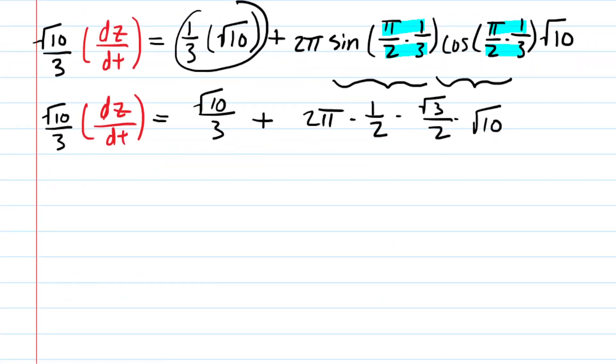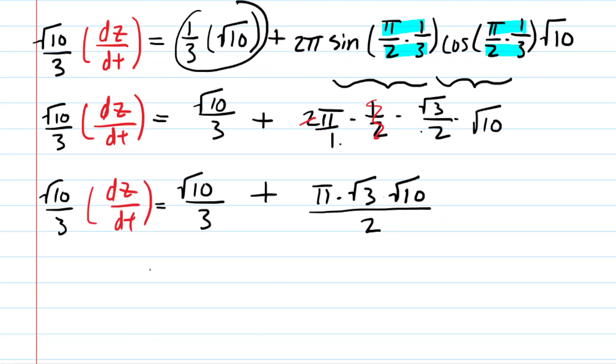Okay, so let's continue simplifying. We have 2 times 1/2, which is just 1. So this is going to end up just being 1π times √3 times √10, and then this is all over 2 because these denominators were 1s, and 1 times 2 there would give us that 2. So that's fancy.